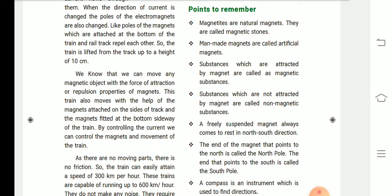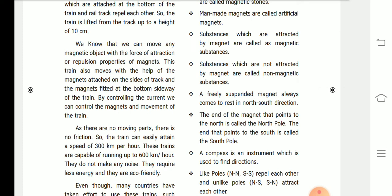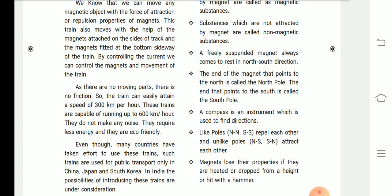So the train is lifted from the track up to a height of 10 cm. We know that we can move any magnetic object with the force of attraction or repulsion properties of magnets. This train also moves with the help of magnets attached on the side of the track and the magnets fitted at the bottom sideway of the train. By controlling the current, we can control the magnets and movement of the train. As there are no moving parts, there is no friction.